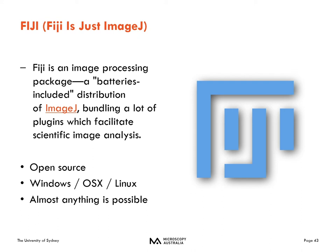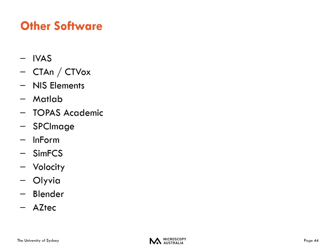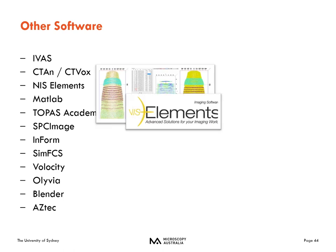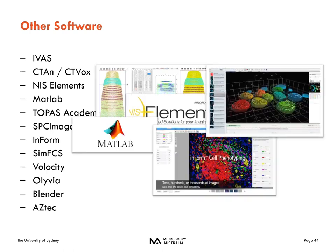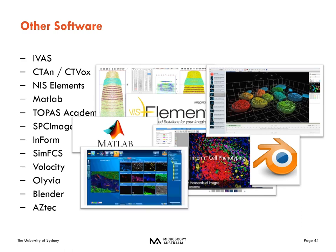The university also has other software packages such as NIS-Elements, MATLAB, inForm, and Velocity, just to name a few. Some of these are unsupported, meaning we just don't have the resources to assist you with them, and others like NIS-Elements are supported by the light and optical team and also by the Nikon reps. Overall, the message is there are many software packages available — please feel free to ask us so that we can assist you with your analysis.